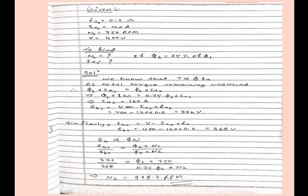Solution is very easy. We know that torque is directly proportional to flux and armature current. So from this equation we can create phi1 into Ia1 equals phi2 into Ia2. We will put the value, basic calculation, after that Ia2 equals 160 ampere. Now we can calculate Eb1, it will be V minus Ia1 into Ra. By putting the value of V, Ia1, and Ra, we will get Eb1 equals 376 volt.